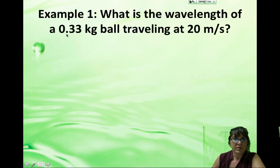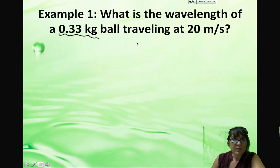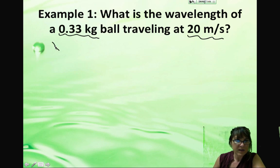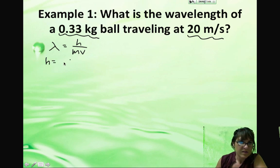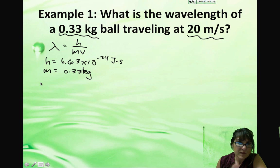So let's see, would this wavelength really be important? So if we have a 0.3 kilogram ball traveling at 20 meters per second, what would its wavelength be? Let's use de Broglie's equation. Wavelength is equal to Planck's constant divided by momentum, mass times velocity. And let's calculate the wavelength. So first of all, we know Planck's constant is 6.63 times 10 to the negative 34 joules times seconds, and we also know the mass of our ball is 0.33 kilograms, and we know too that our velocity is 20 meters per second.